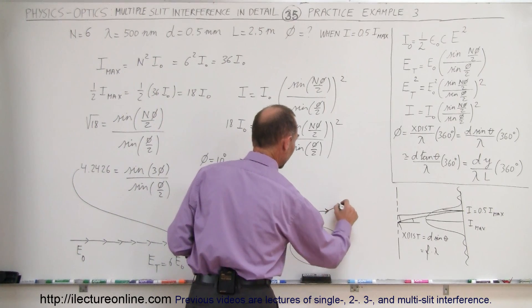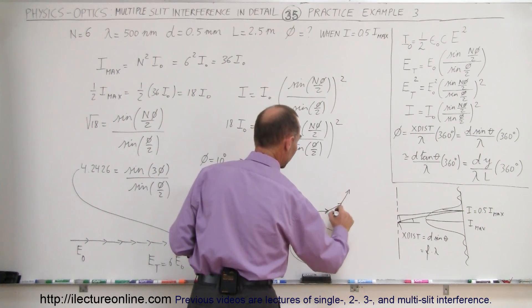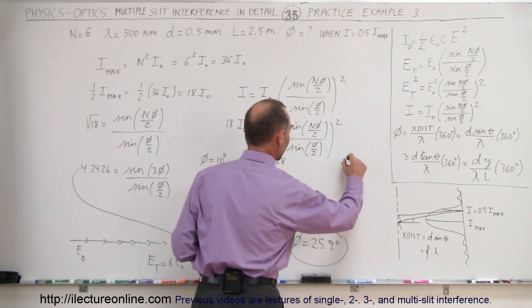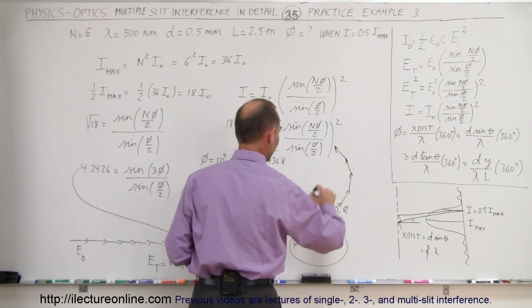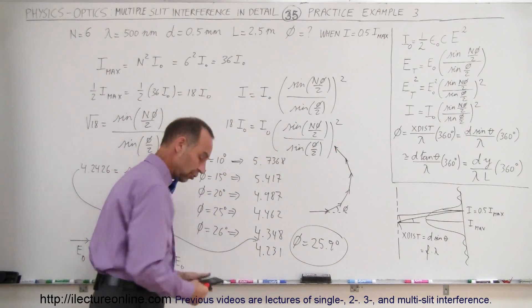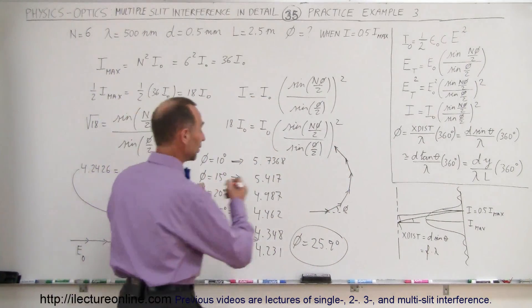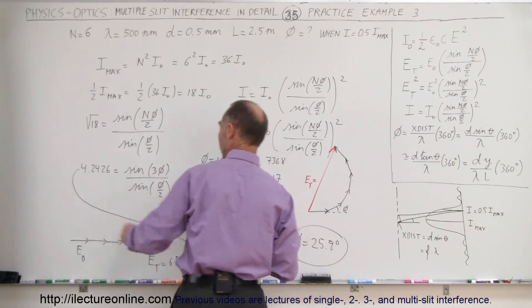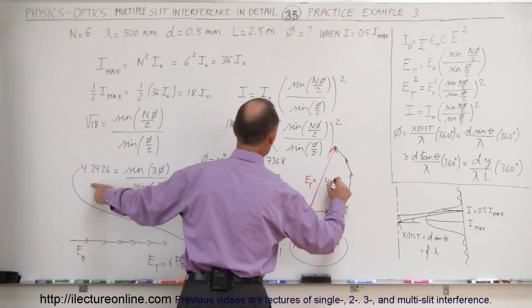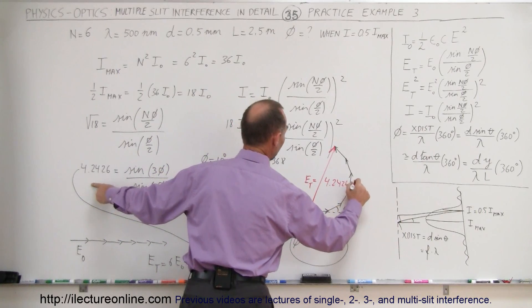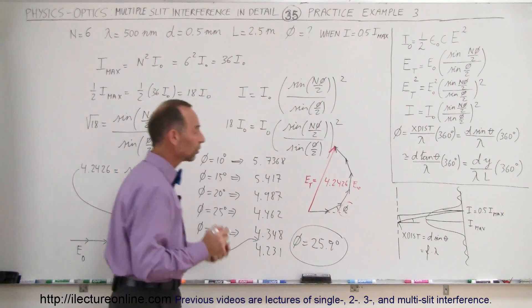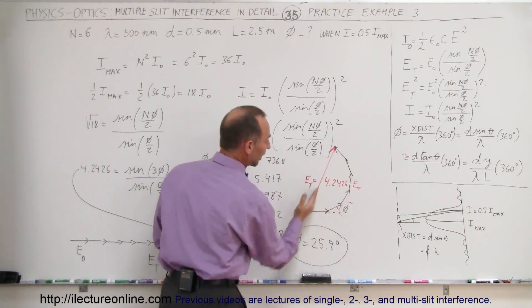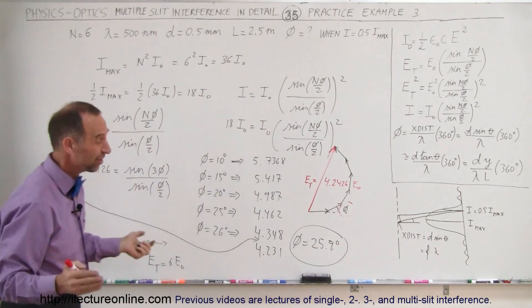Each one has a value E sub-naught, and so we know that E total equals 6 times E sub-naught. So what we now want to do is add those 6 phasors together with a phase difference. There's my first phasor, there's my second phasor, my third phasor. We're looking for a phase difference phi so that when I add all those phasors together, 5 and 6, my E total would have to be 4.2426 E sub-naught.